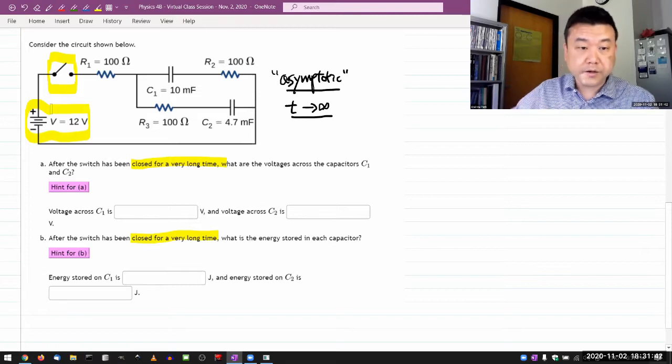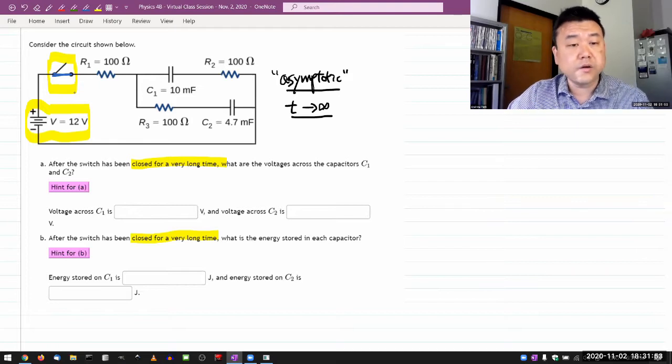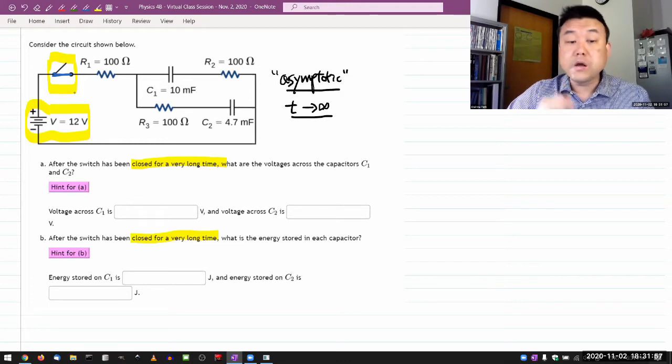For this particular question, we're going to close this switch and wait for a very long time for the circuit to come to some kind of equilibrium or steady state. And once it has done that, then what does that look like?